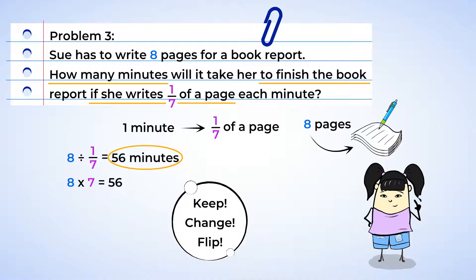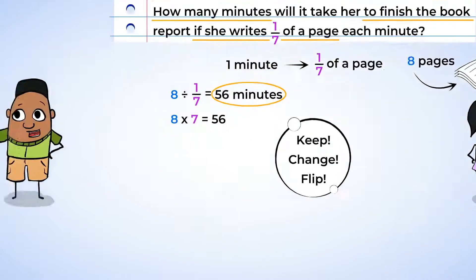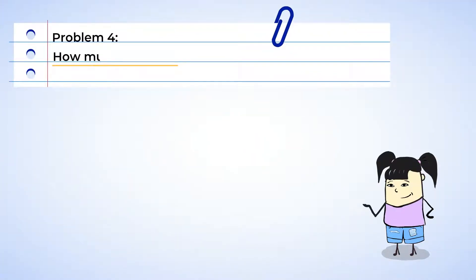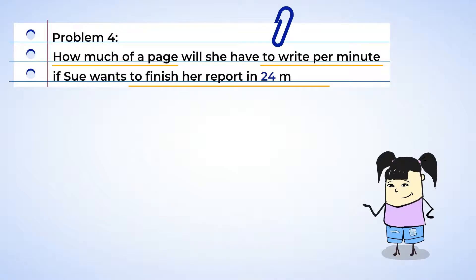Well, what if Sue had plans with her friends and wanted to finish her book report even quicker? How much of a page would she have to write every minute to get it done in 24 minutes? Well, let's look at the expression we just solved. So the total number of pages is not changing. We still need eight. But instead of 56 minutes, we now want 24 minutes. So what can we multiply eight by to get 24?